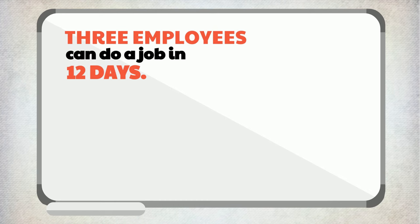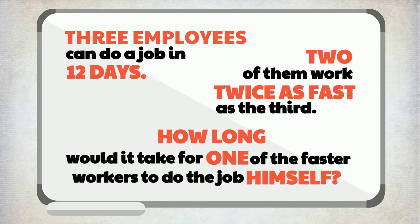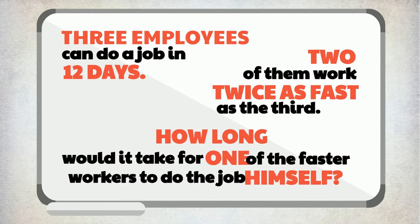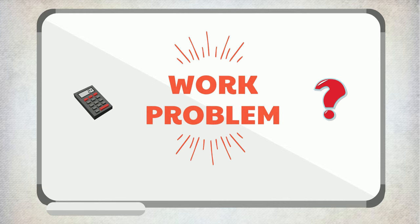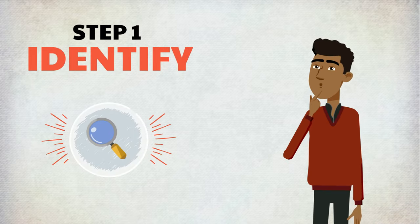Three employees can do a job in 12 days. Two of them are twice as fast as the third. How long would it take for one of the faster workers to do the job himself? This is an example of a work problem, a common type of mathematical reasoning question on the civil service exam.